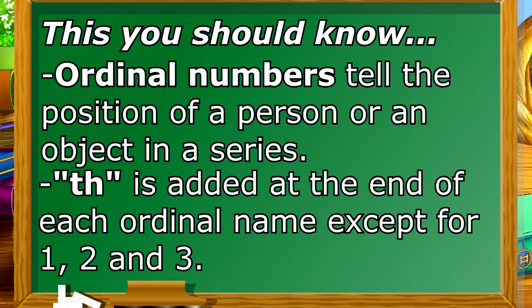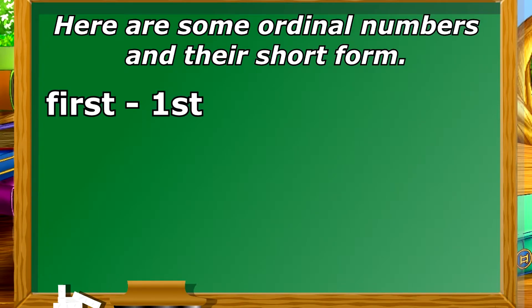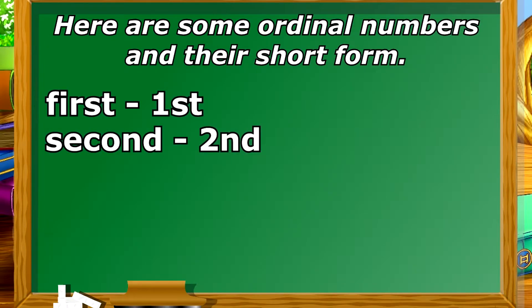Th is added at the end of each ordinal name except for 1, 2 and 3. Here are some ordinal numbers in their short form: 1st, 2nd, 3rd.